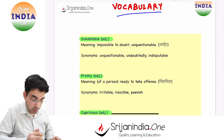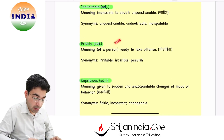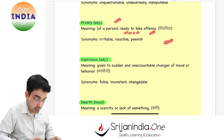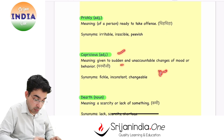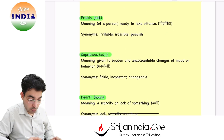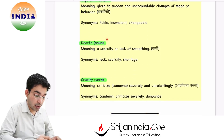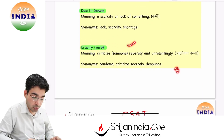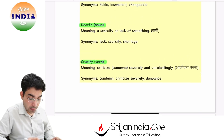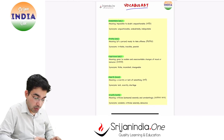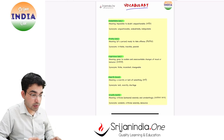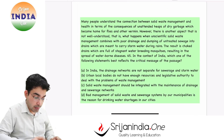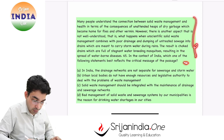Aaj ki vocabulary: 'indubitable' — impossible to doubt, unquestionable. 'Prickly' — chidh chidha, ready to take offense. 'Capricious' — manmauji, given to sudden and unaccountable changes of mood or behavior. 'Dearth' — kami, a scarcity or lack of something. 'Crucify' — alochna karna, to criticize severely and unrelentingly. If you come across any other important word, write it down with its meaning in the comment section.